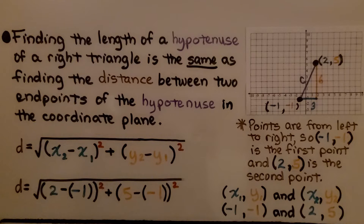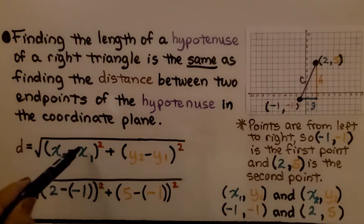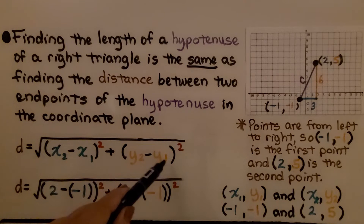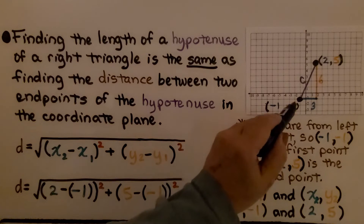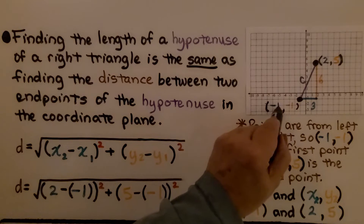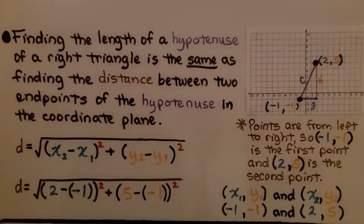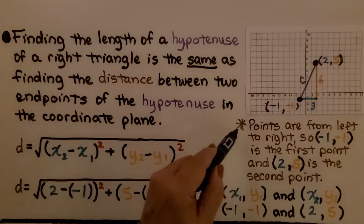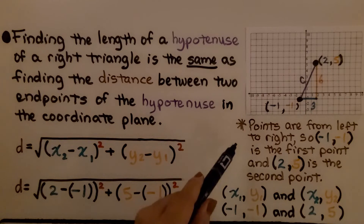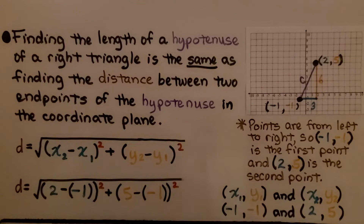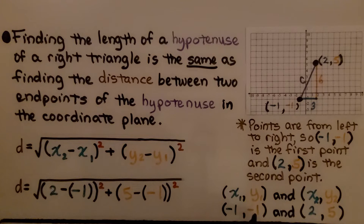Finding the length of a hypotenuse of a right triangle is the same as finding the distance between two endpoints of the hypotenuse in the coordinate plane. We have the distance formula: d equals the square root of (x sub 2 minus x sub 1) squared plus (y sub 2 minus y sub 1) squared. We look at the points: negative 1 for x and negative 1 for y, and 2 for x, 5 for y. Points are read left to right, so the first point is (−1, −1) and the second is (2, 5). We substitute: the square root of (2 minus negative 1) squared plus (5 minus negative 1) squared.